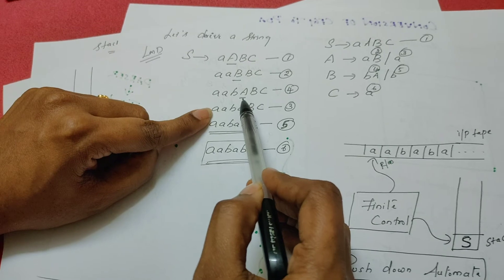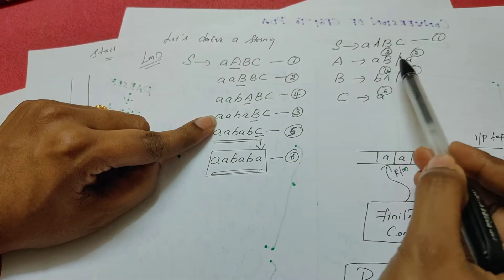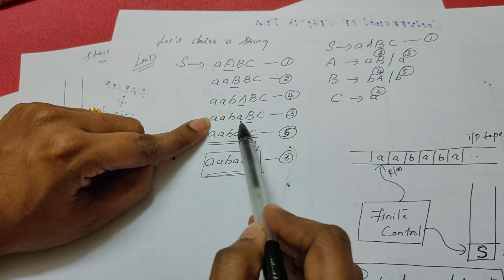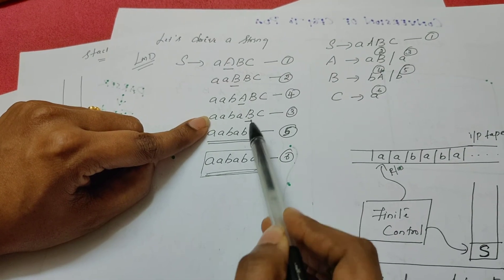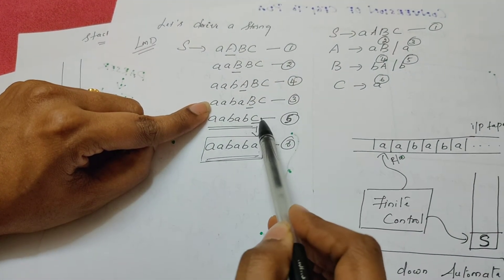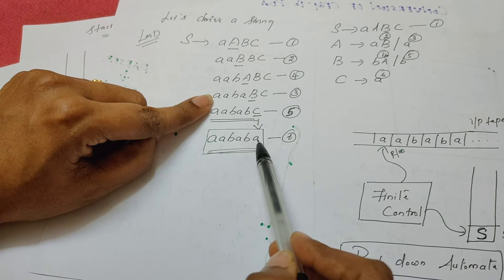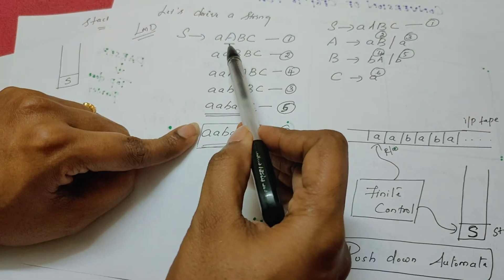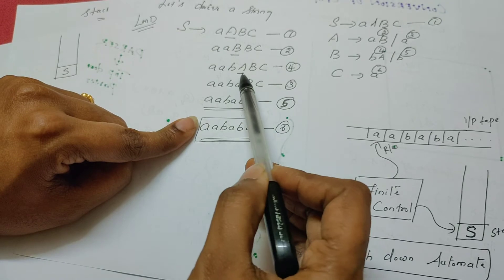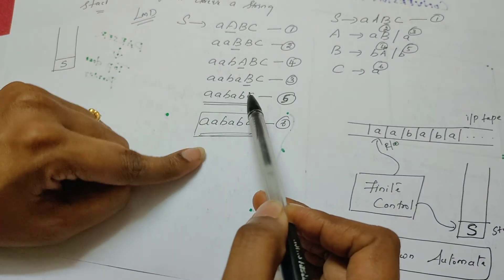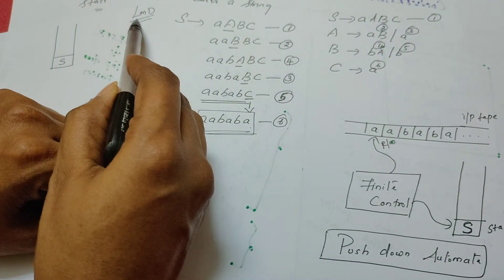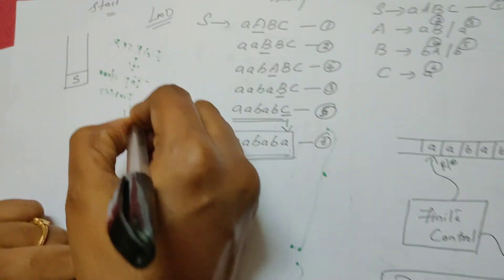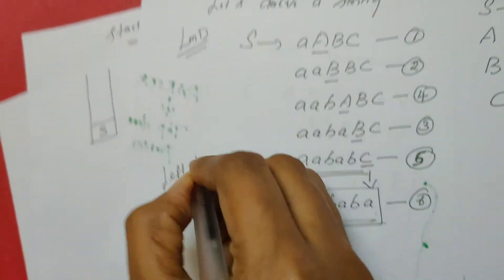At the next step, in place of A, I can choose again either A, B or A — this time I chose A. Similarly, in place of B, I chose B. Finally, in place of variable C, I chose A. In the entire derivation process, every time we chose the leftmost variable to replace — this type of derivation is called LMD, which means leftmost derivation.